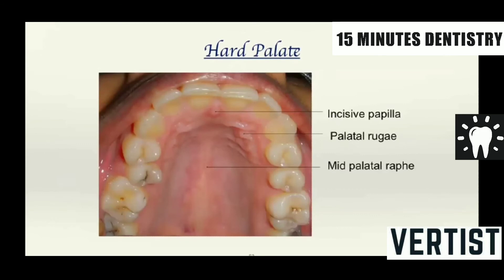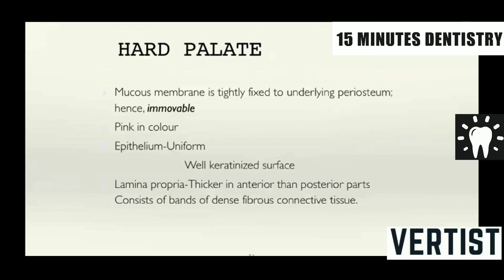The hard palate has macroscopic features including the incisive papilla, the palatal rugae, and the mid-palatine raphe. The mucous membrane here is tightly fixed to the underlying periosteum, hence it is immovable and pink in color. The epithelium is uniform with a well-ridged surface. The lamina propria is thicker in the anterior than the posterior parts and consists of bands of dense fibrous connective tissue.